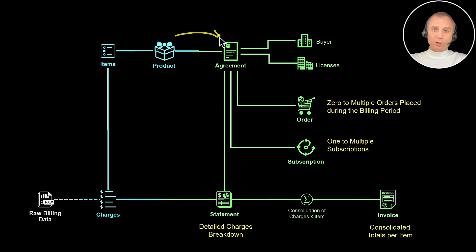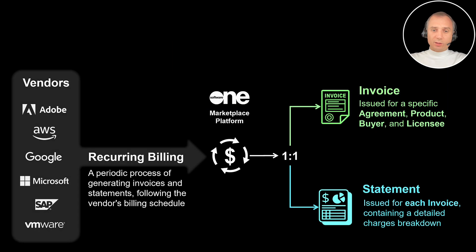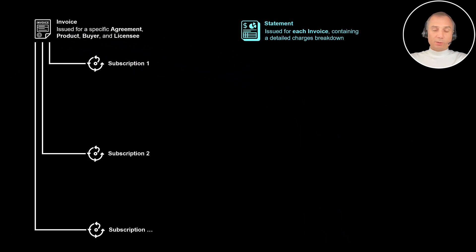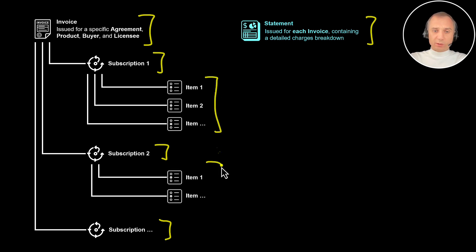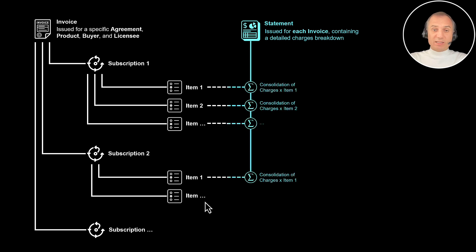The structure of those documents reflects the actual logical structure of our platform. You will see information at the header level of those documents like agreement, product, and buyer — they don't change across the invoice and statement, so they are constant for the header. Then you will have the list of subscriptions, as many subscriptions as you have in that agreement, because invoices are issued per agreement. And for every subscription, you will see a list of items — those items are consolidated charges for those items in the scope of a given subscription.